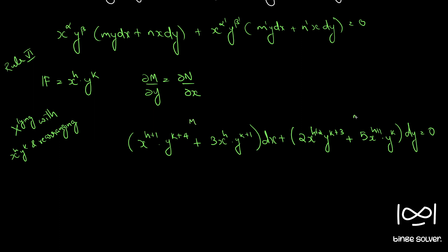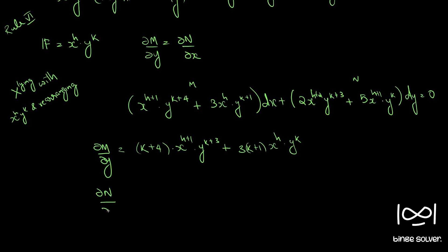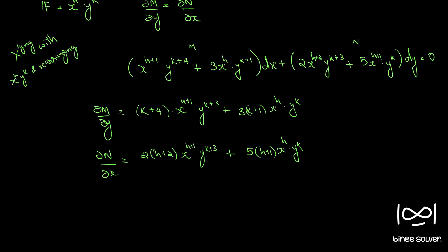This gives us our M and N. We find ∂M/∂y first to apply the exactness property. So ∂M/∂y equals (k plus 4) into x raise to h plus 1 into y raise to k plus 3, plus 3(k plus 1) into x raise to h into y raise to k. Similarly, ∂N/∂x equals 2(h plus 2) into x raise to h plus 1 into y raise to k plus 3, plus 5(h plus 1) into x raise to h into y raise to k. Since ∂M/∂y equal to ∂N/∂x, we can compare the coefficients.